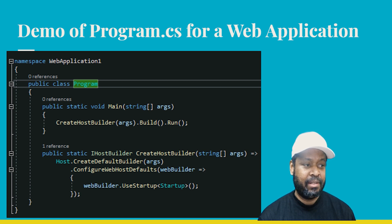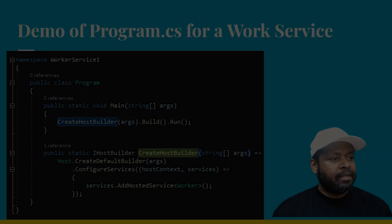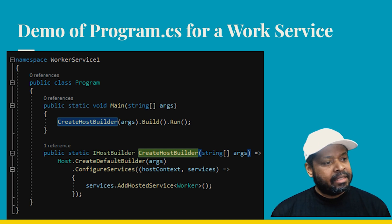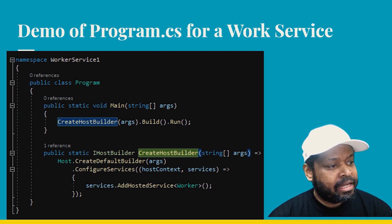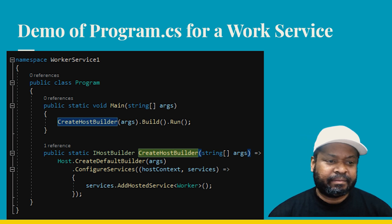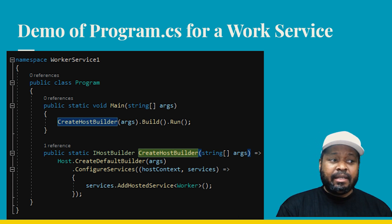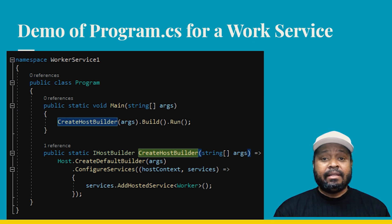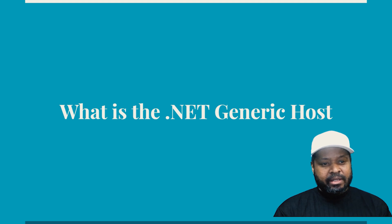That's the web application. If you look at where it says namespace, that's the API. And right now, this is a demo of the program.cs for a worker service. It's similar to all of them except when you get into what the CreateHostBuilder line is and what it does — it differs. So the difference between a regular console app and the other three types is that they have what is called a generic host.